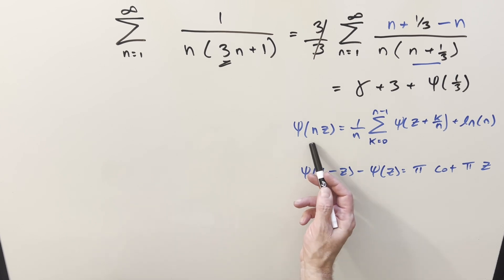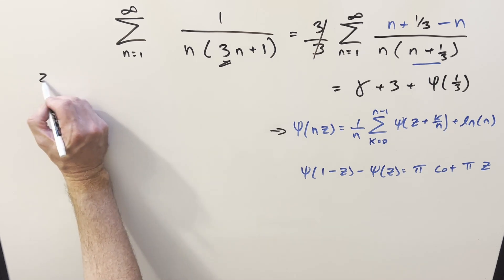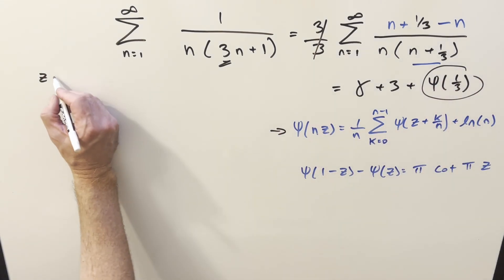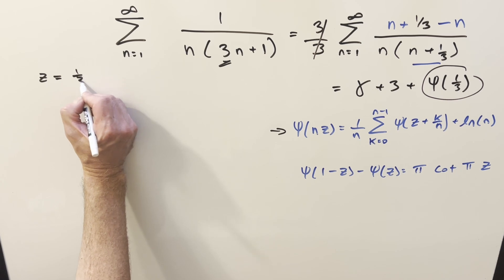By the way, I think I've done this before in previous videos, so I'll provide a link in the description to the playlist for the digamma function. But let's just go through it again. So I have these two formulas. First one is the multiplication formula. The second one is the reflection formula.